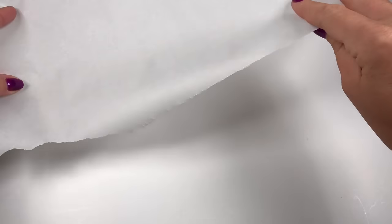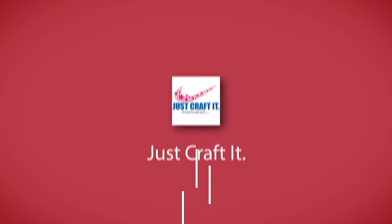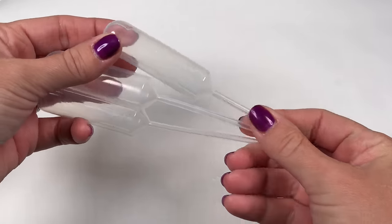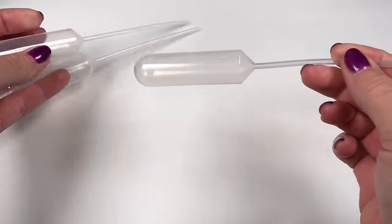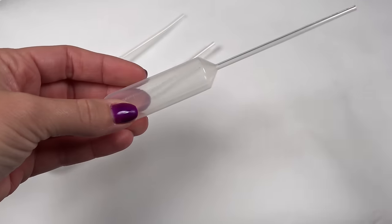Start by covering your surface with parchment paper. For the water bottles, I'm using these 15-milliliter droppers. You can find these at craft stores or on Amazon.